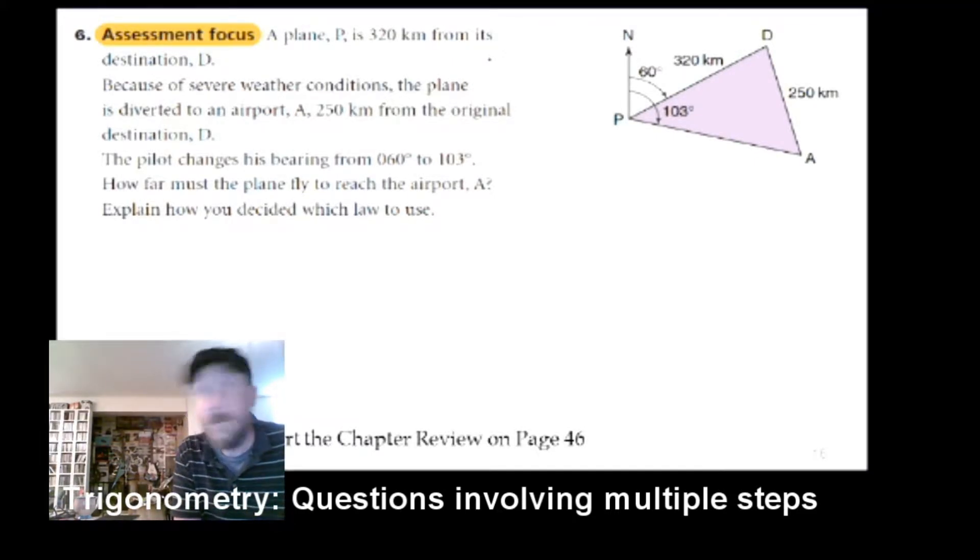Okay, let's see how we can do here. At the bottom it says we're going to start a chapter review, so we're nearing the end here. Let's see what we got. A plane, which is P, is 320 kilometers from its destination, which is D.